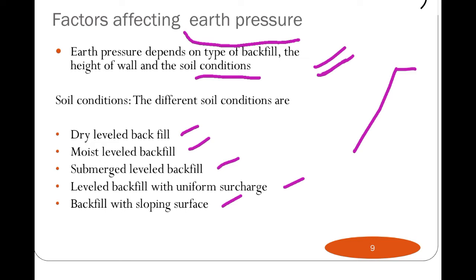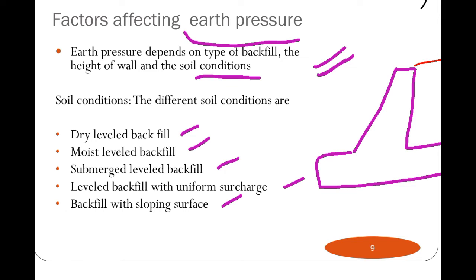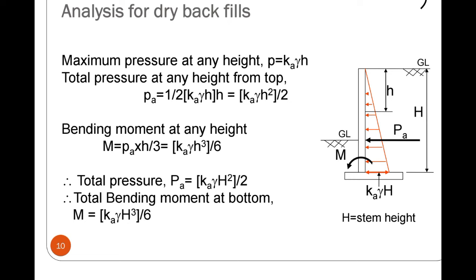For a retaining wall, if the soil is dry, that is called gamma_d, the dry unit weight. If the soil has moisture content, that will be gamma_saturation. If the water table is up to the top of the retaining wall, that will be gamma_submerged, called the submerged backfill. If the backfill has a surcharge, that is called uniform surcharge. If the soil has a sloping surface, that is called backfill with sloping surface.